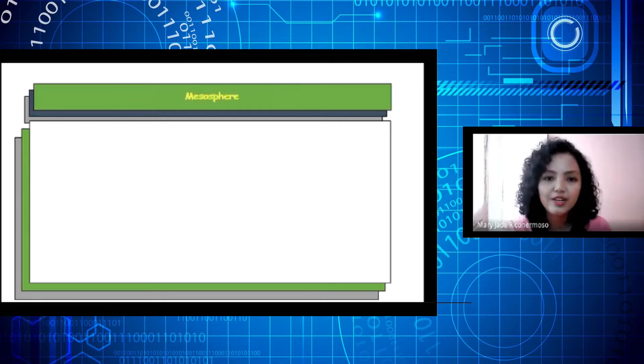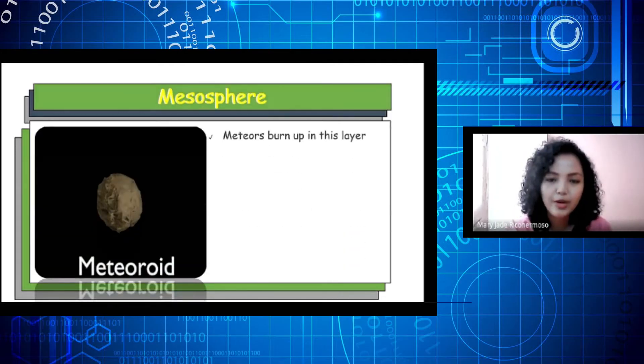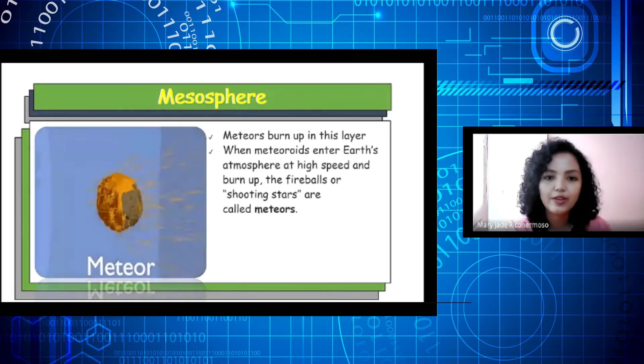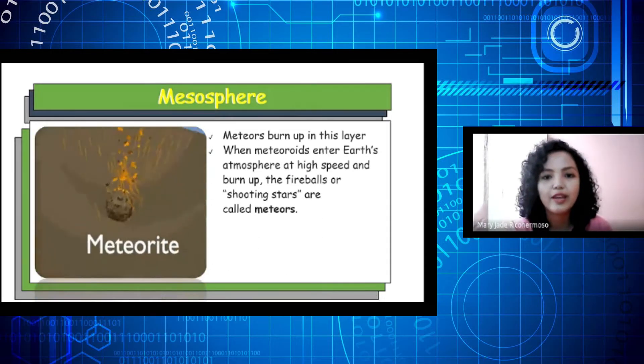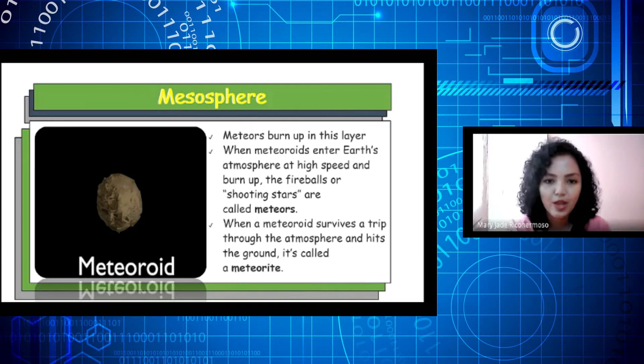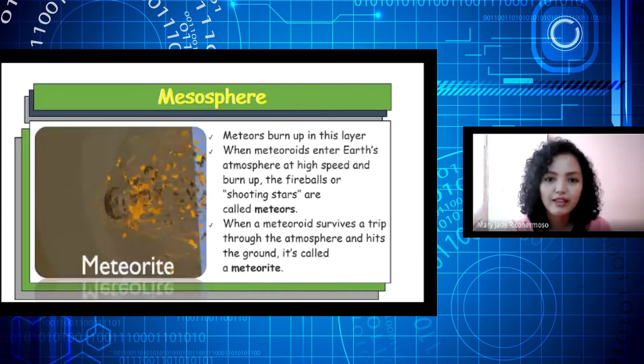The next layer is the mesosphere. Meteors burn up in this layer. When meteoroids enter Earth's atmosphere at high speed and burn up, the fireballs or shooting stars are called meteors. When a meteoroid survives a trip through the atmosphere and hits the ground, it is called a meteorite.